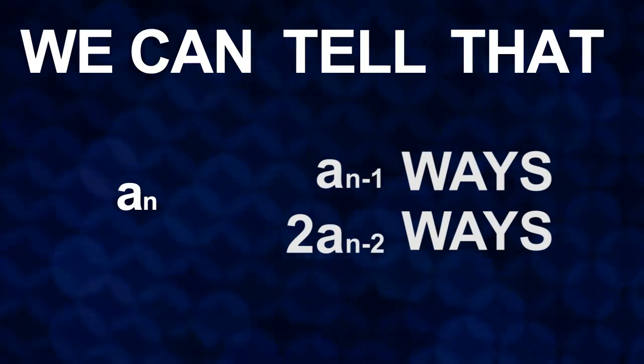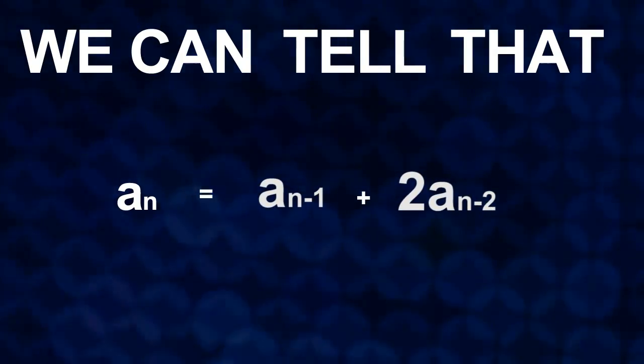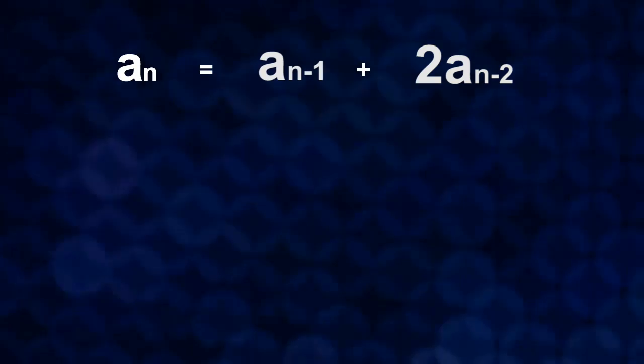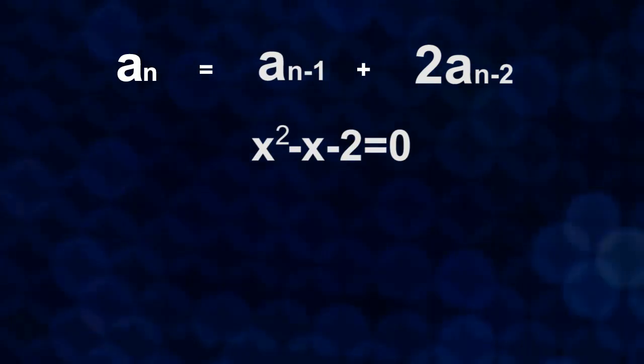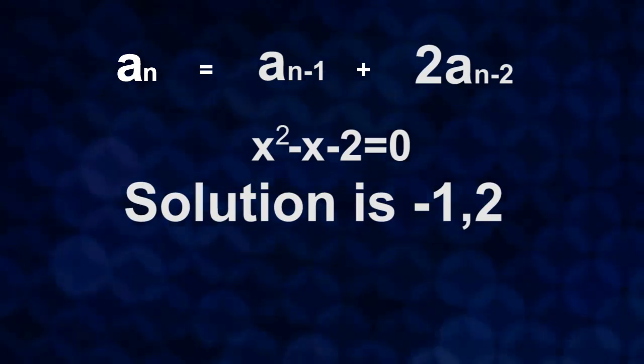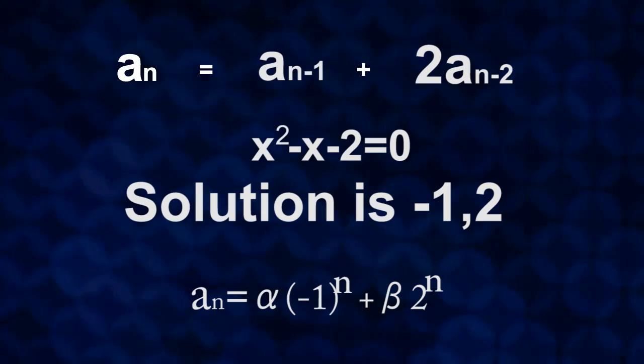Therefore, we can tell that a n is equal to a n-1 plus 2 a n-2. Now, here we can use what we learned before in this video. By using it, this recurrence formula's characteristic equation is shown as below. And this particular solution is minus 1 and 2.